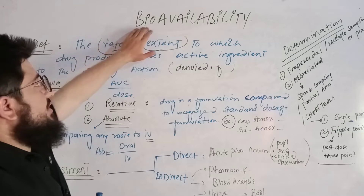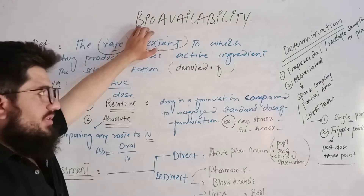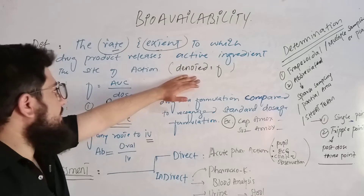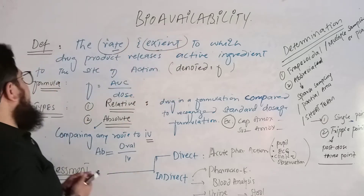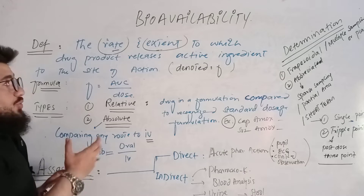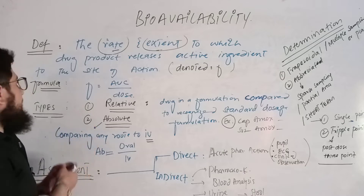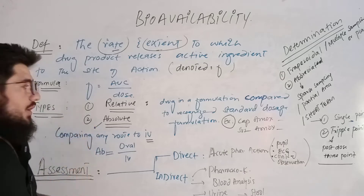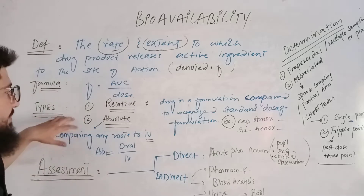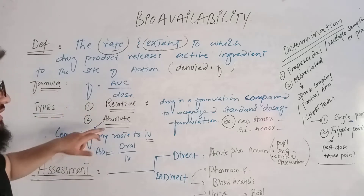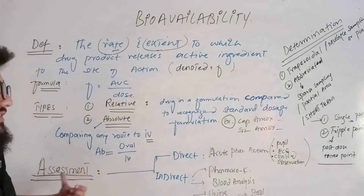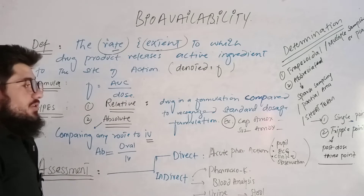Number one, we'll talk about the definition of bioavailability. Then we'll talk about the representation or notation of bioavailability and the symbol used for it. Then we'll talk about the formula of bioavailability. Then we'll talk about the types: relative and absolute bioavailability, and the assessment of bioavailability — direct method and indirect method of assessment.